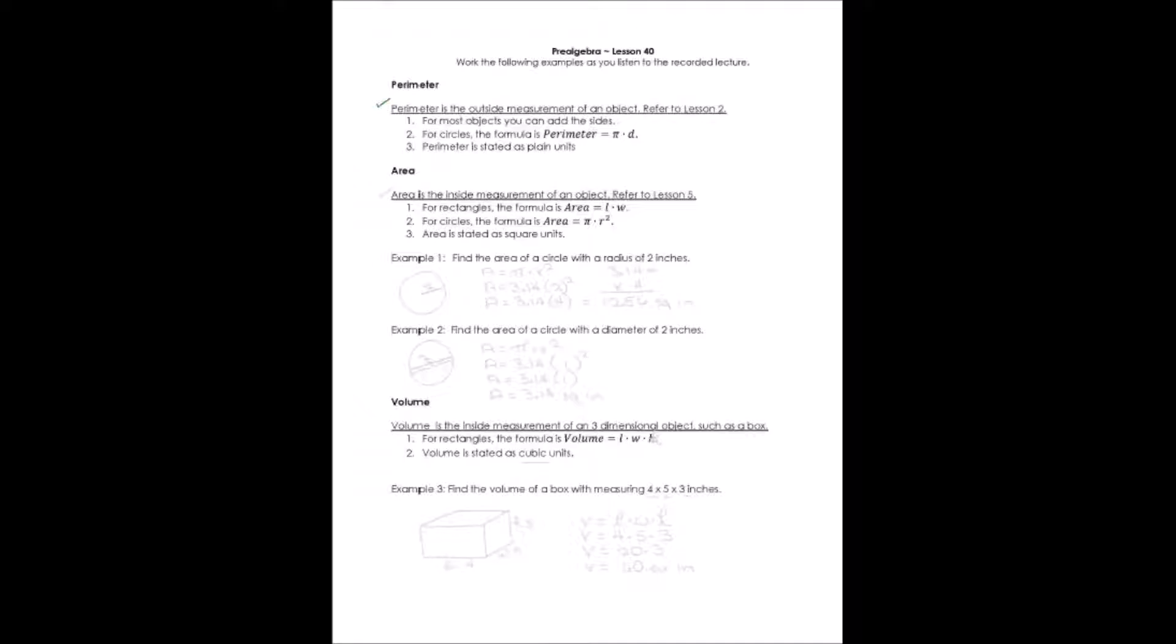For area, that's the inside measurement of an object. We did this one in lesson five. For a rectangle, the area formula is length times width. For circles, the formula is area equals pi times r squared. And we always state area as square units.